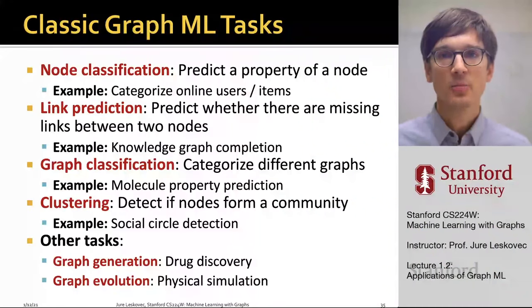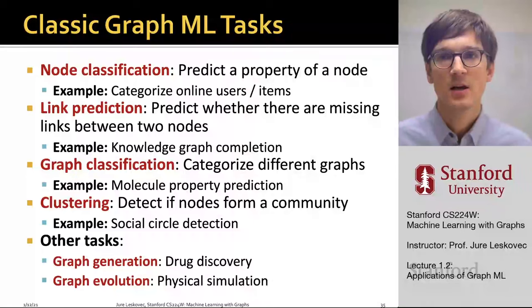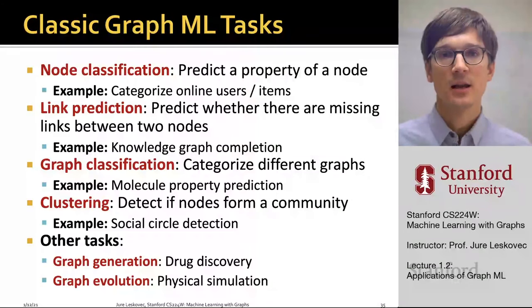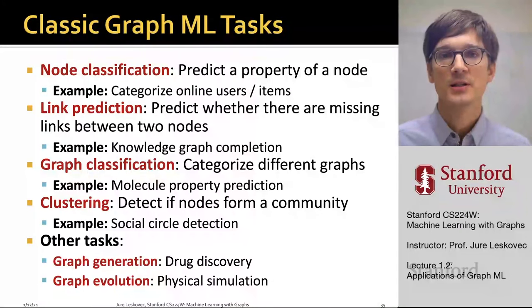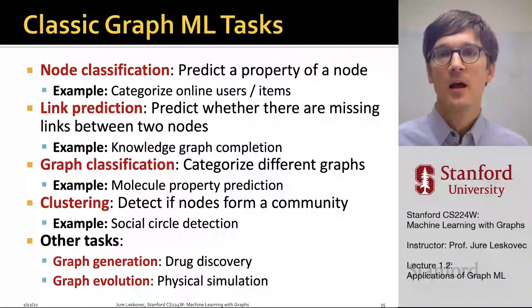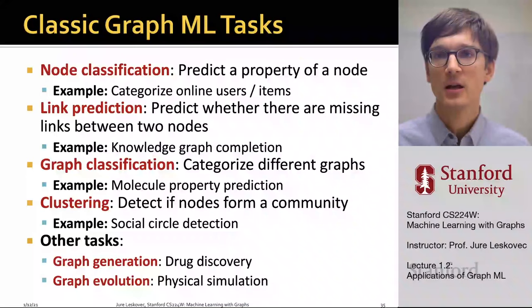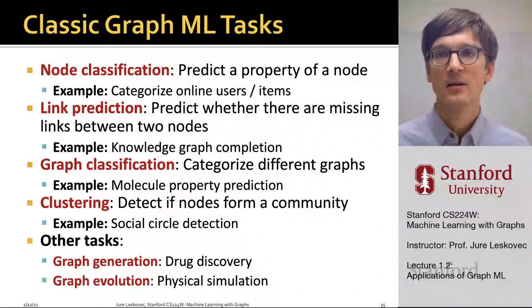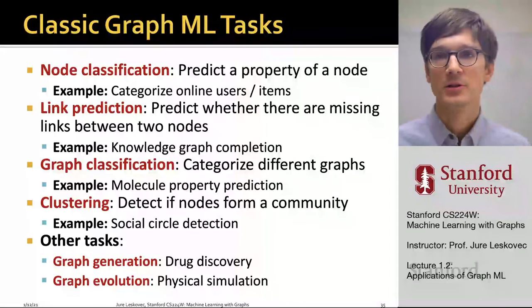In link prediction, we try to predict whether there are missing links between a pair of nodes. One such example of this task is knowledge graph completion. For graph-level tasks like graph classification, we try to categorize different graphs. For example, we may want to represent molecules as graphs and then predict properties of molecules. This is especially interesting and important for drug design, where we try to predict properties of different molecules and different drugs.